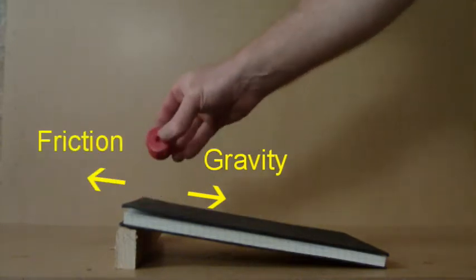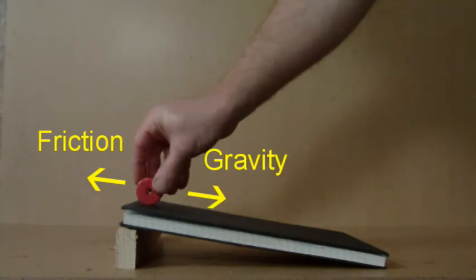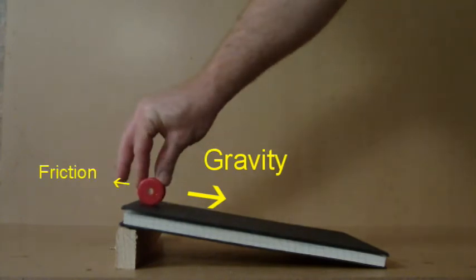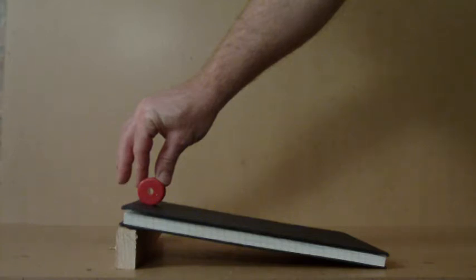I can easily change the dynamics of the situation by turning the reel on its side. This reduces the surface area in contact with the ramp. The reel can no longer provide the friction to balance the gravity pulling it downwards. The forces are no longer balanced, and the reel starts to move.